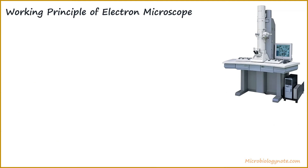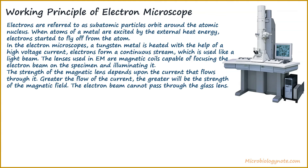Now we will talk about how electron microscopes work. Electrons are referred to as subatomic particles that orbit around the atomic nucleus. When atoms of a metal are excited by external heat energy, electrons start to fly off from the atom. In electron microscopes, a tungsten metal is heated with the help of a high-voltage current, and electrons form a continuous stream which is used like a light beam. Magnetic coils are capable of focusing the electron beam on the specimen and illuminating it. The strength of the magnetic lens depends upon the current that flows through it — the greater the flow of current, the greater will be the strength of the magnetic field. The electron beam cannot pass through a glass lens.